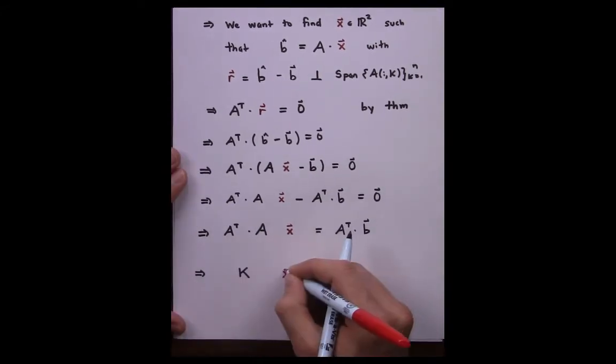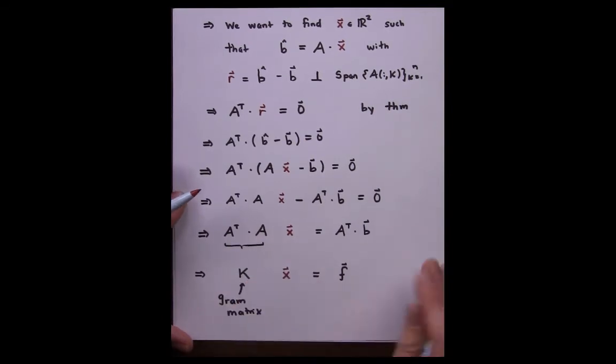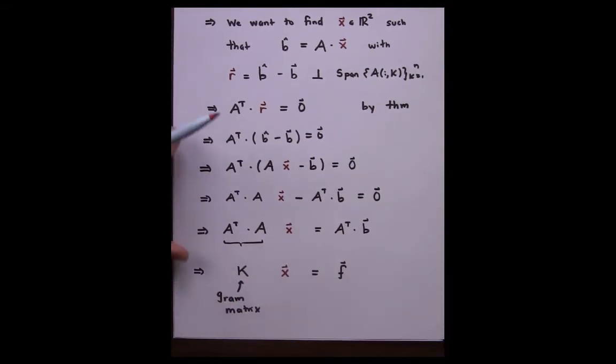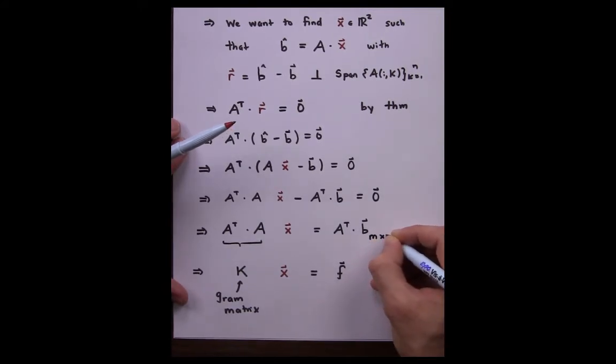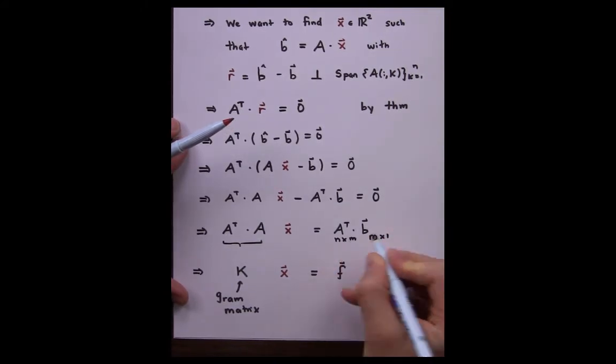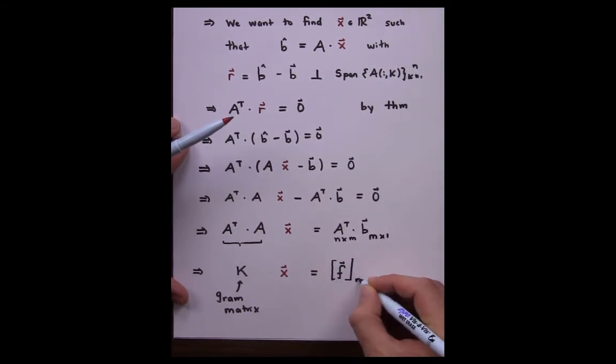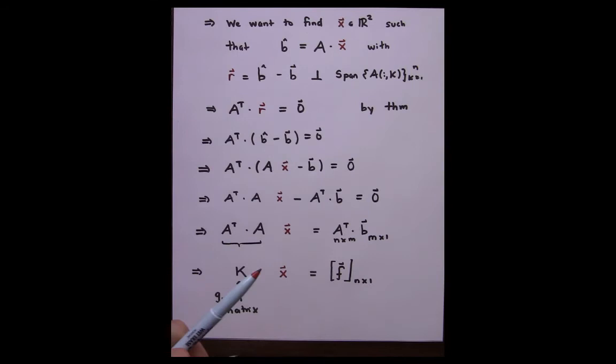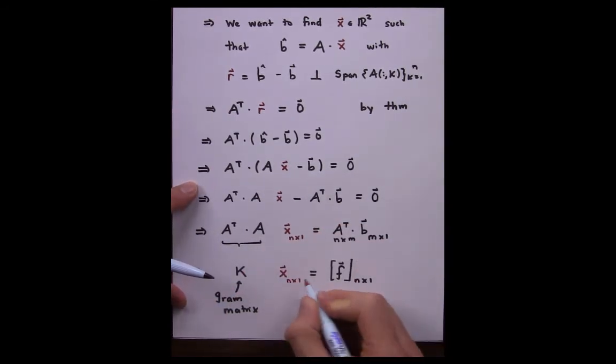This matrix A transpose times A is very famous. It's called the Gram matrix. And it's worth noting the dimensions of this equivalent linear systems problem. Notice that the matrix A is M by N. That means A transpose is N by M. A transpose times B would then be an N by 1 vector. X is an N by 1 vector.